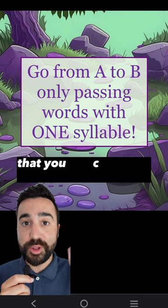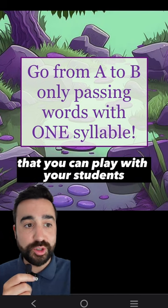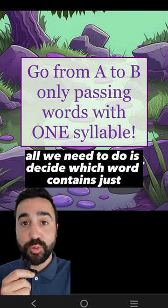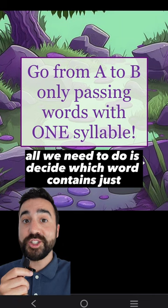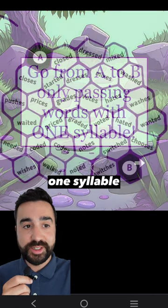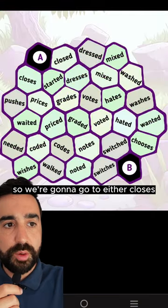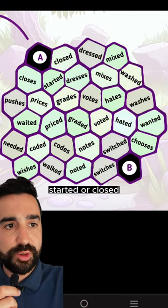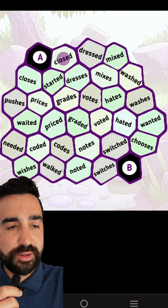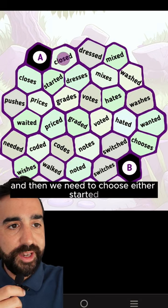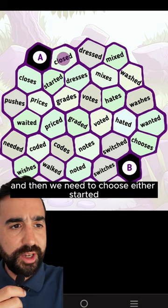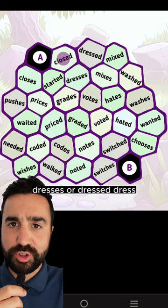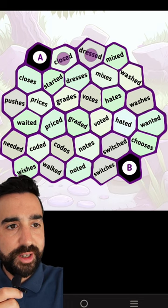Today I want to show you a pronunciation game that you can play with your students. All we need to do is decide which word contains just one syllable. So we're going to go to either closes, started, or closed. And then we need to choose either started, dresses, or dressed. Dress.